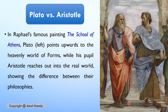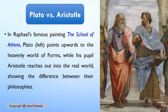In Raphael's famous painting The School of Athens, Plato — painted on the left — points upwards to the heavenly world of forms, while his pupil Aristotle reaches out into the real world, showing the difference between their philosophies. This famous Renaissance painting by Raphael captures Plato's arm pointing upward to the world of ideal forms while Aristotle's hand reaches into the real world.